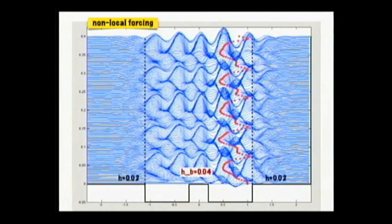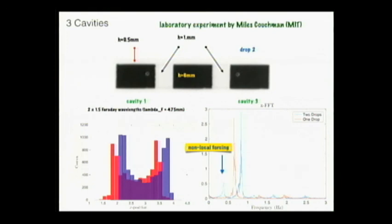Miles Couchman doing experiments at MIT put three cavities. There's a droplet here and there, and he let these guys go. They're oscillating. At some point, this droplet here died - it coalesced and disappeared. What was amazing is that when this droplet was present, you have a main mode for oscillation. There was a secondary mode due to the cavity far away. When it died, it went to the red mode. Basically, there is some correlation at a distance.